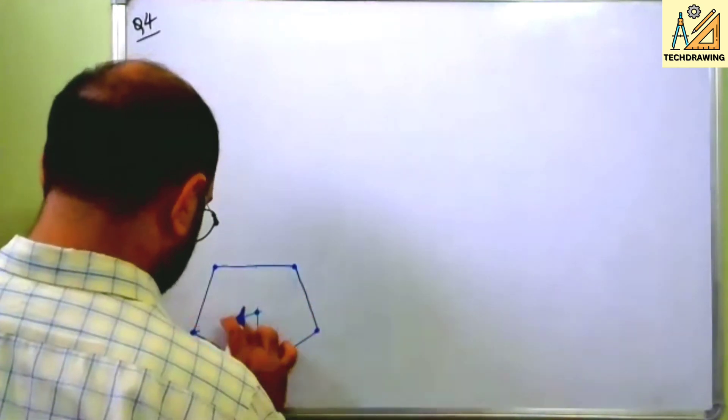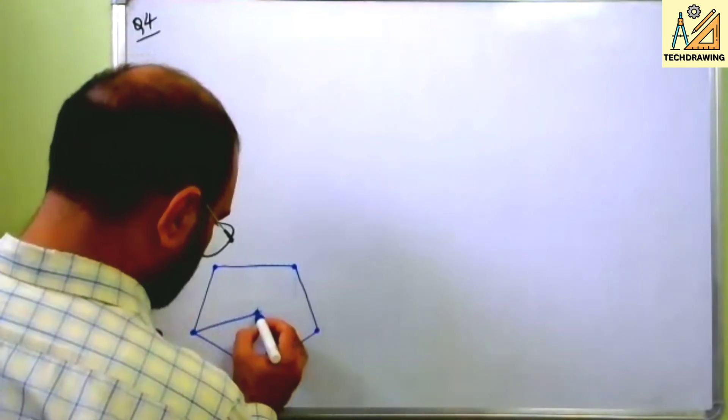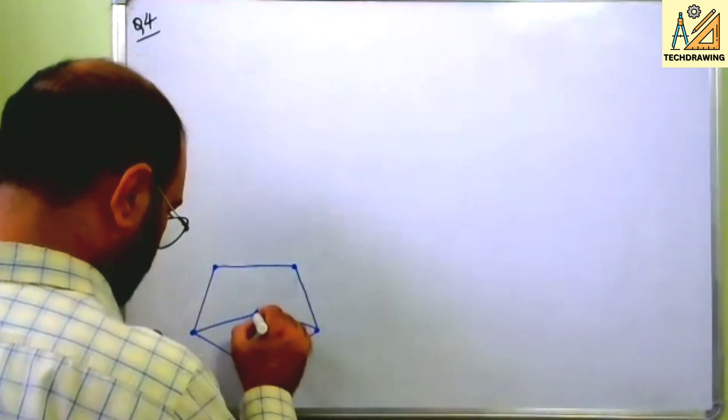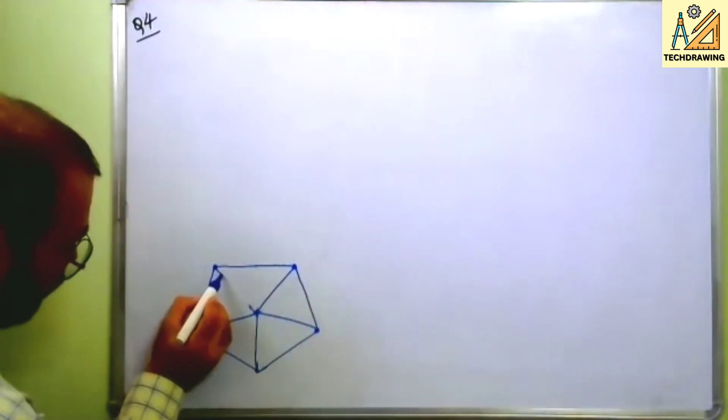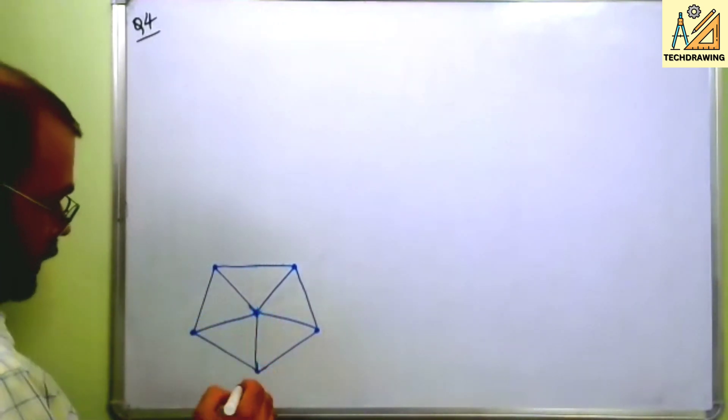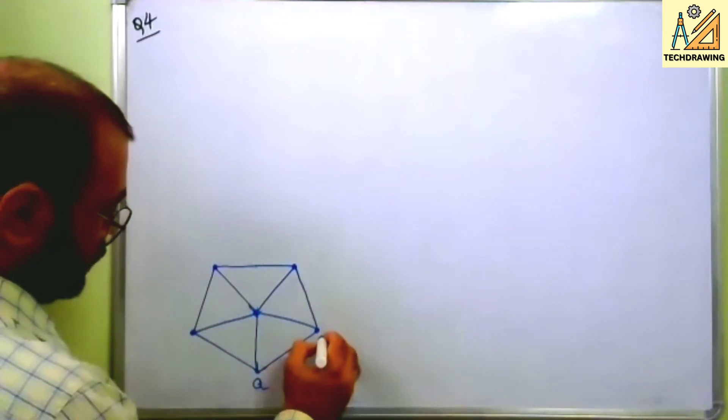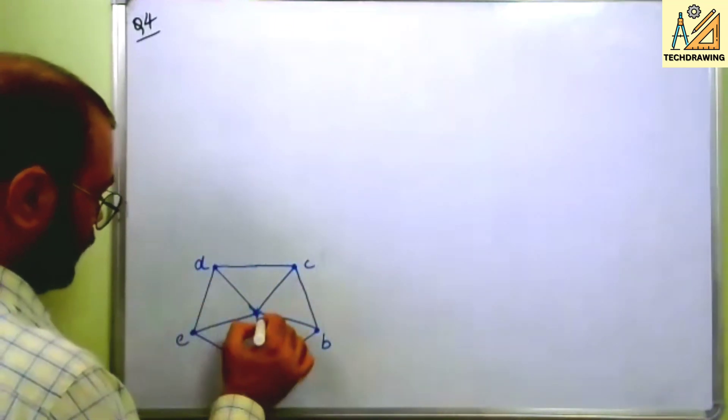We just join all the corners. Let us say this is A, B, C, D, E and this is O.